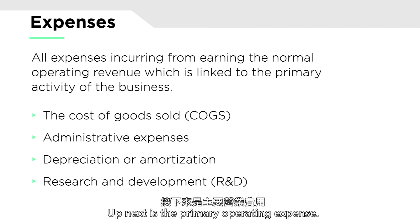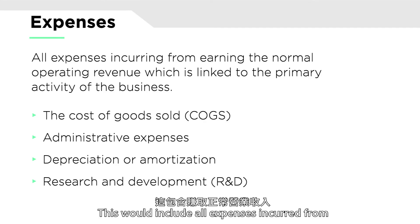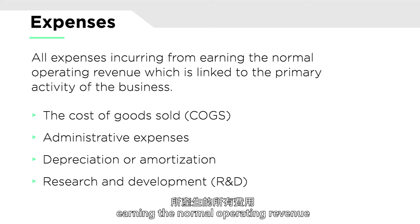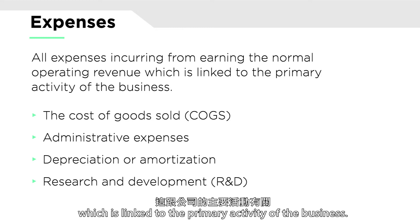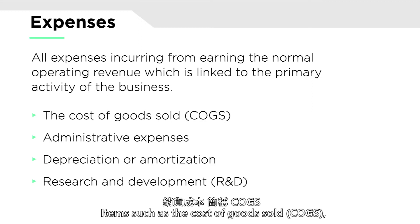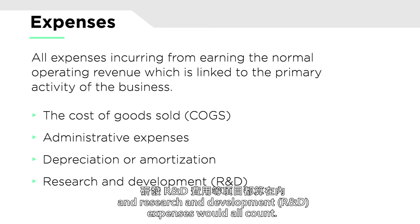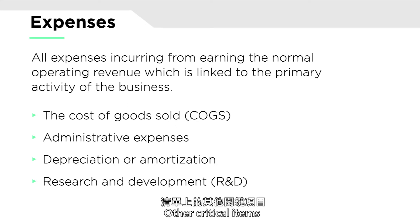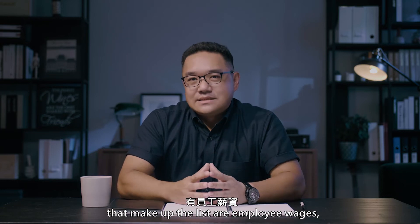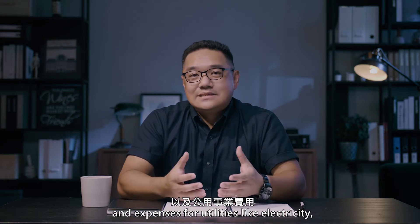Up next is the primary operating expense. This would include all expenses incurred from earning the normal operating revenue, which is linked to the primary activity of the business. Items such as the cost of goods sold, administrative expenses, depreciation or amortization, and research and development expenses would all count. Other critical items that make up the list are employee wages, sales commissions, and expenses for utilities like electricity, water, rent, and transportation.